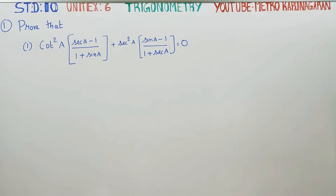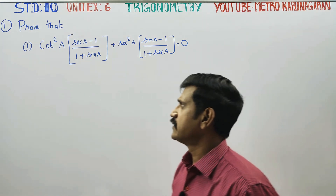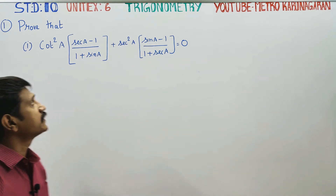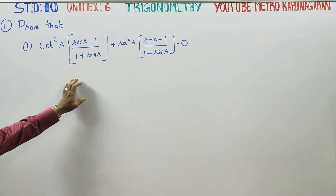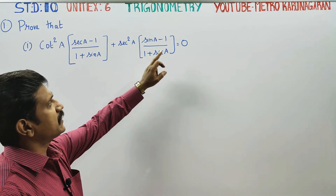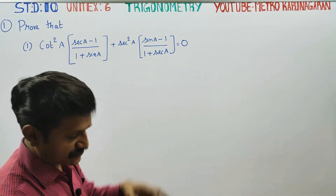Dear 10th standard students, in unit exercise number 6 trigonometry, prove that cot squared A times (secant A minus 1) divided by (1 plus sin A), plus secant squared A times (sin A minus 1) divided by (1 plus secant A), is equal to 0.